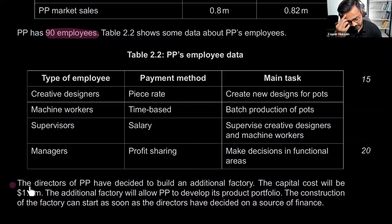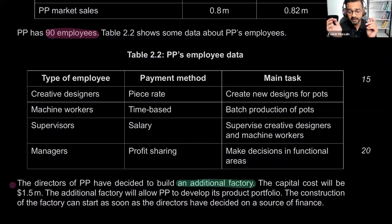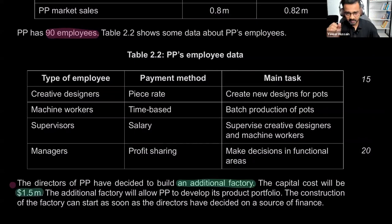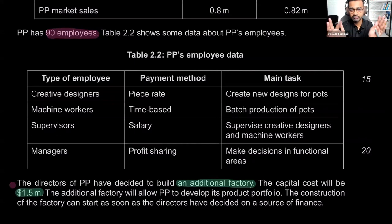The directors of PP have decided to build an additional factory — a response to growing market. The capital cost will be $1.5 million. Anytime an amount is in millions, consider that a big amount. This already narrows you down to long-term sources of finance, because you can't pay off $1.5 million in the first year. If it's a big amount in millions, you automatically start thinking about long-term sources.